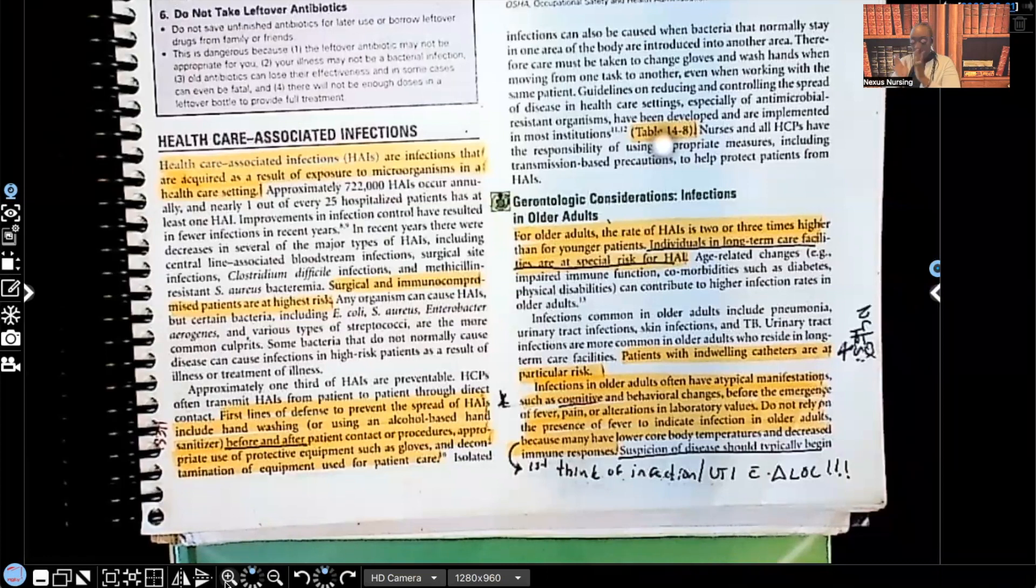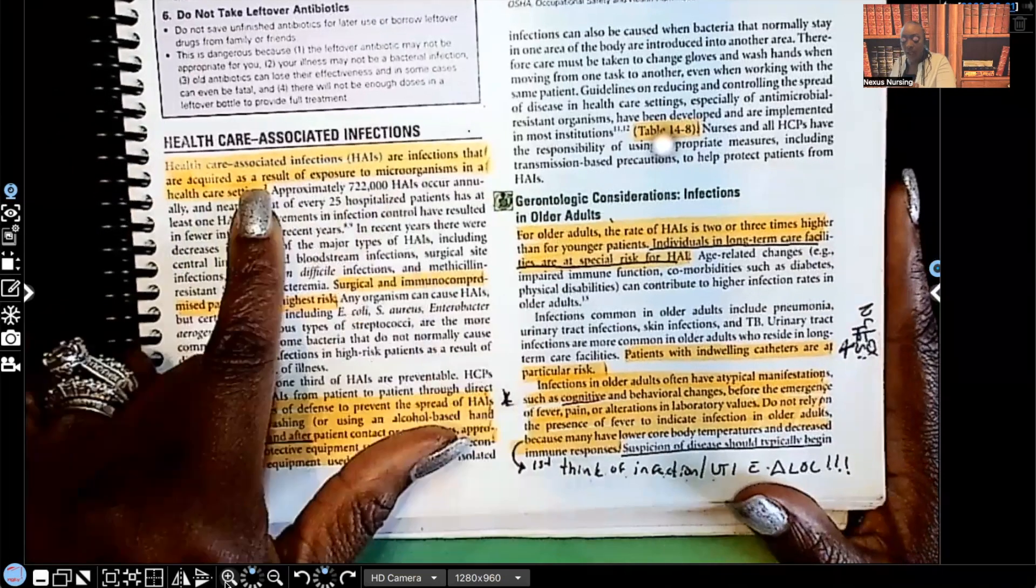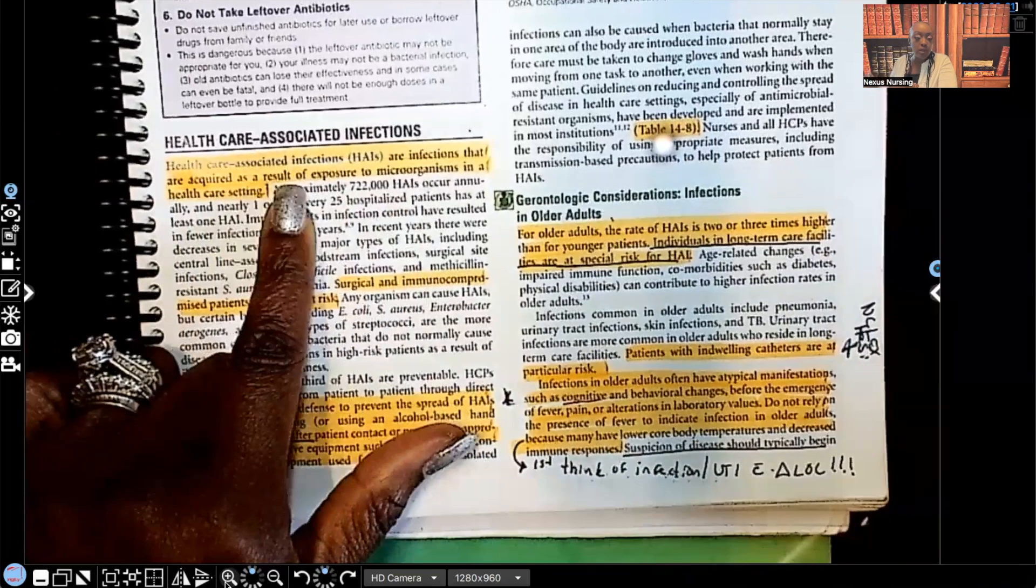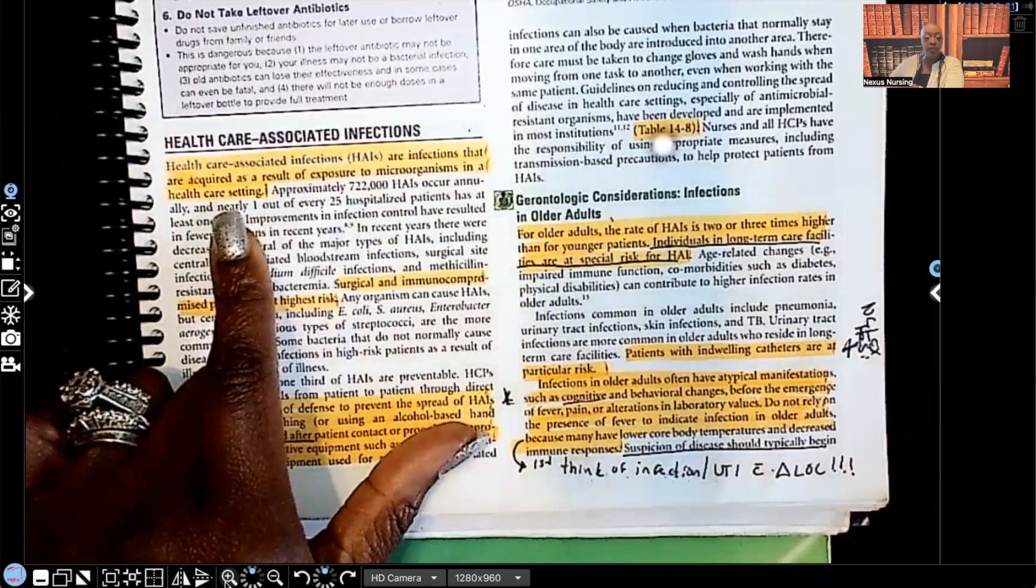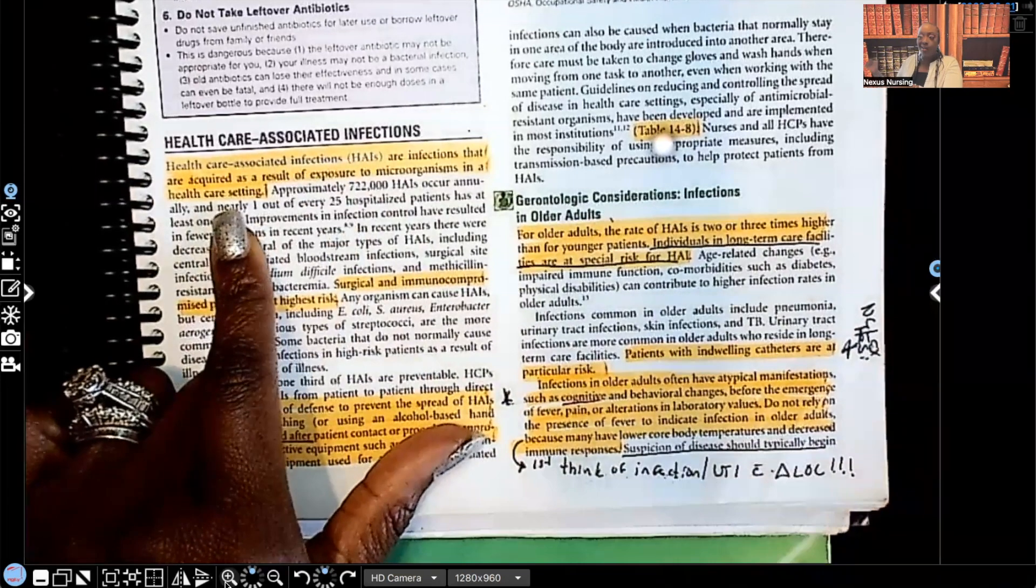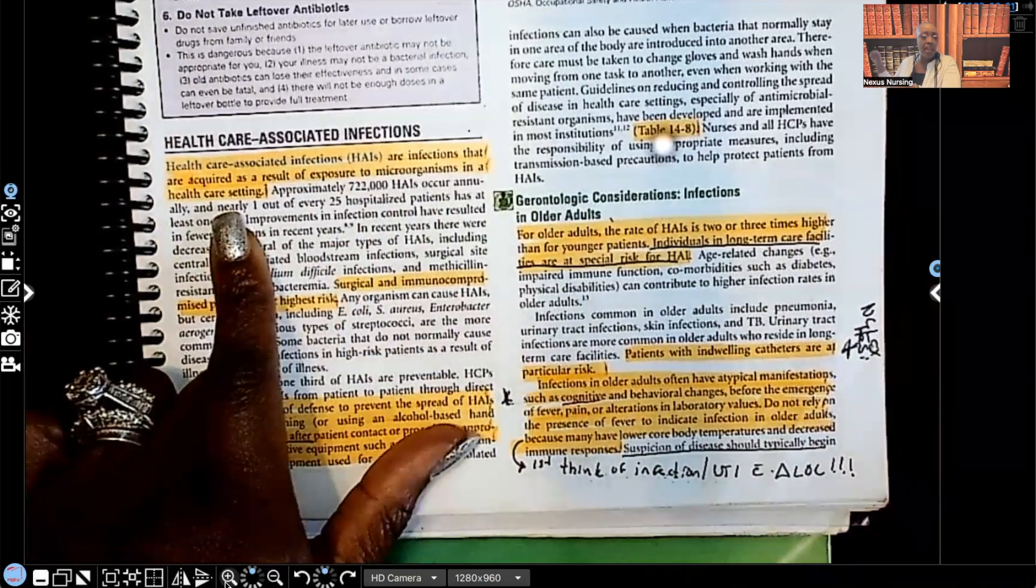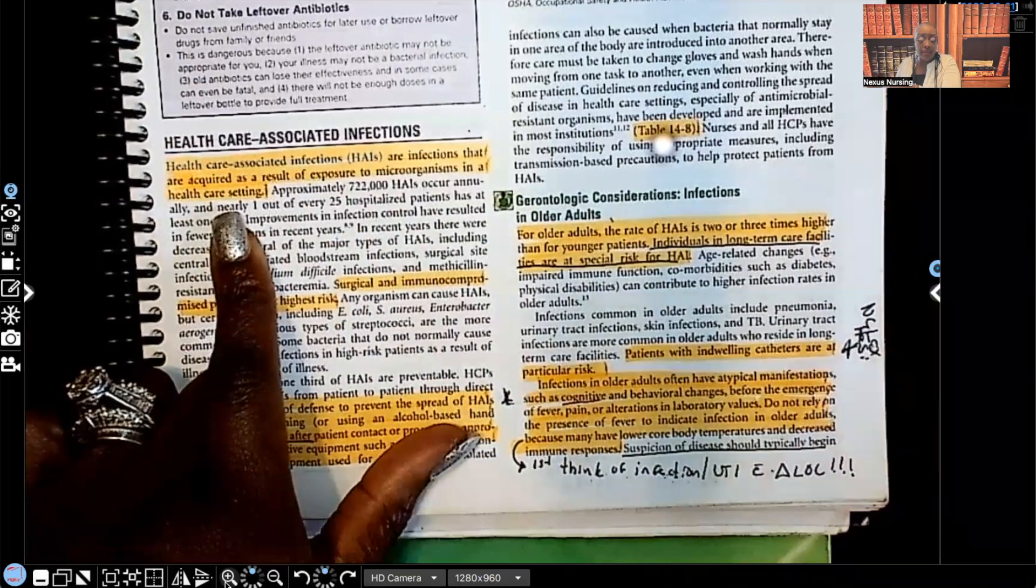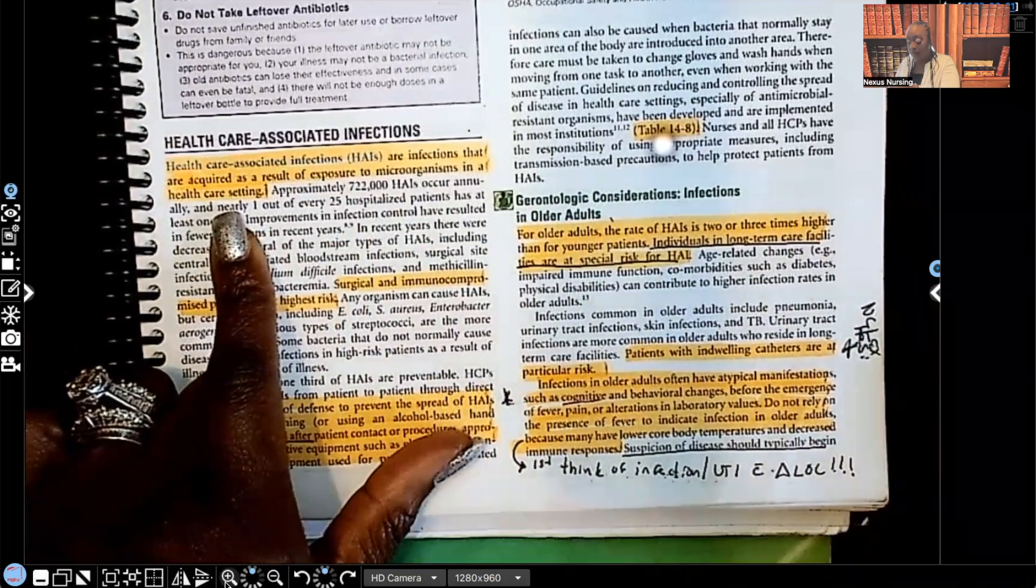Healthcare-associated infections. Look what it says. It says healthcare-associated infections are infections that are acquired as a result of exposure to microorganisms. Where? In a healthcare setting. So this is an infection, not that the patient got it home, not that they got while they were out hanging out in the streets. They got it from us. They got it within the facility. That's what's known as a healthcare-associated infection.